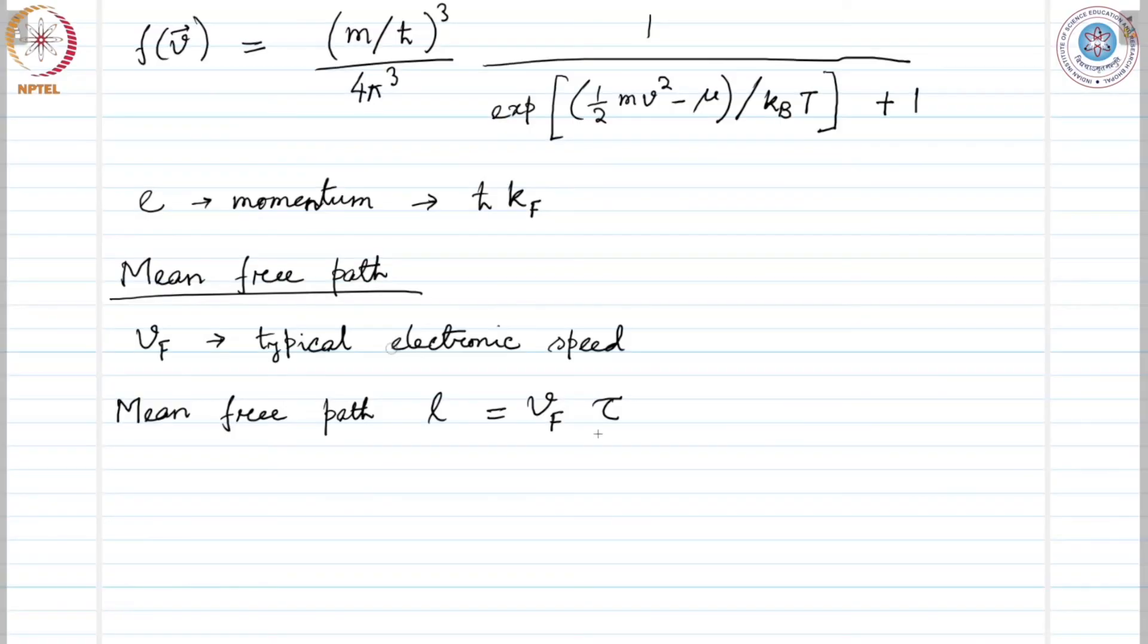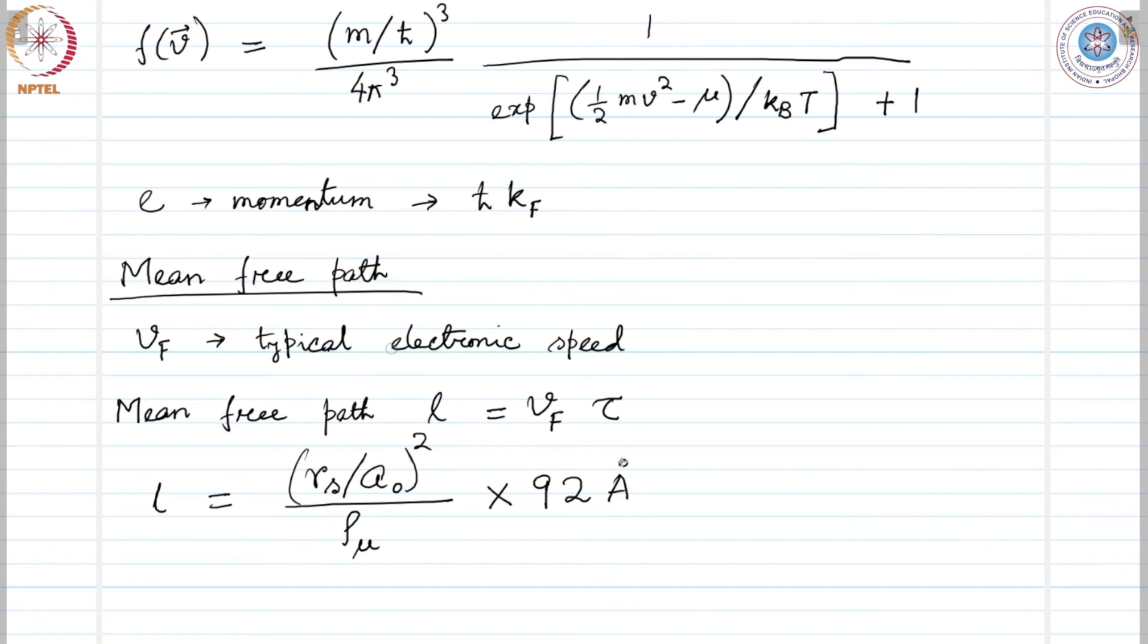Hence, when we are calculating the mean free path we must multiply this Fermi velocity and the relaxation time that will give us the mean free path which would obviously be larger than Drude's estimate. This mean free path L can be given as Rs over A naught divided by rho mu this quantity squared times 92 angstrom.